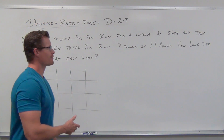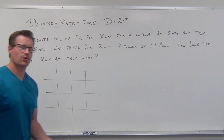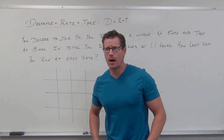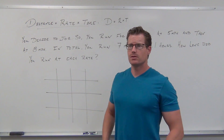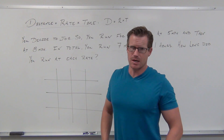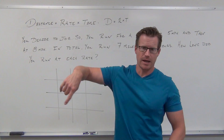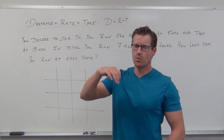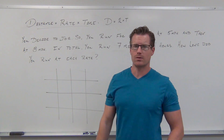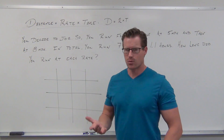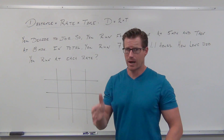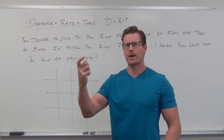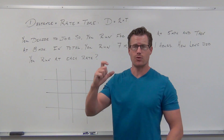Let's say we have our example: you decide to go for a run. You jog five miles an hour for a little while, and then you step it up and jog eight miles an hour. In total, you make the loop back to where you started, and you've gone seven miles. It took you 1.1 hours. So we know how long we ran and the total distance — what we don't know is how long we ran each segment.